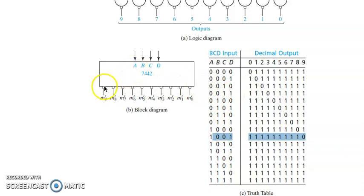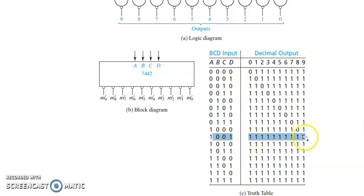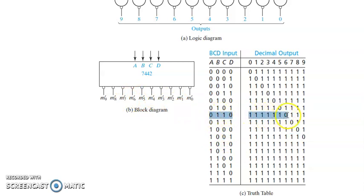All outputs are active-low. To get output 9 active, the corresponding output line goes to 0 while all others remain 1. For example, with input 1001 (decimal 9), only the output 9 line is 0. Similarly, for input 0110 (decimal 6), only the output 6 line is 0, and all others are 1. That is how the truth table for the 7442 is written.